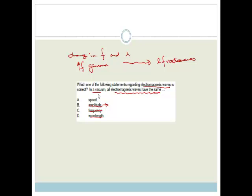So what remains the same? The speed. And we know this because the speed of all electromagnetic waves in a vacuum is 3 times by 10 to the 8 meters per second, which is the speed of light. And why? Because light is an electromagnetic wave.